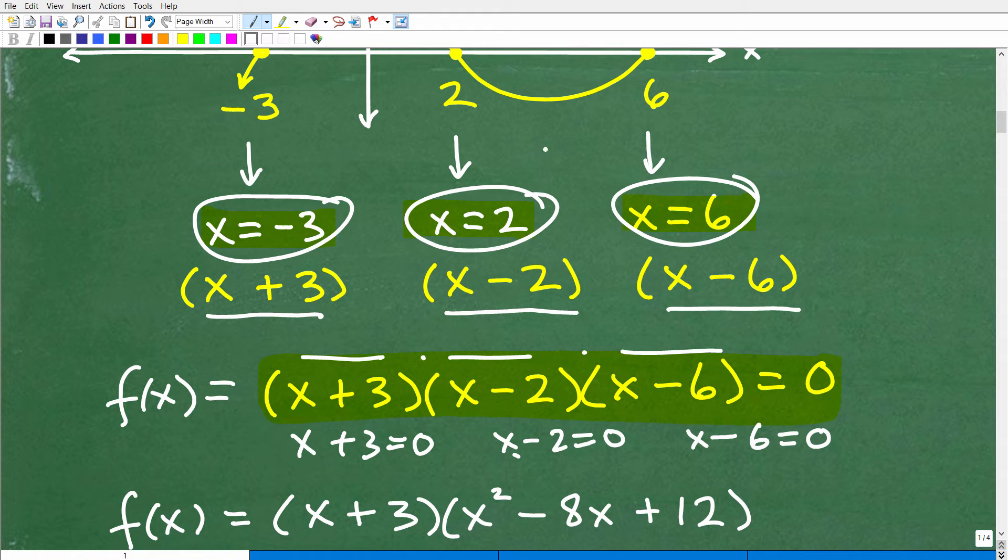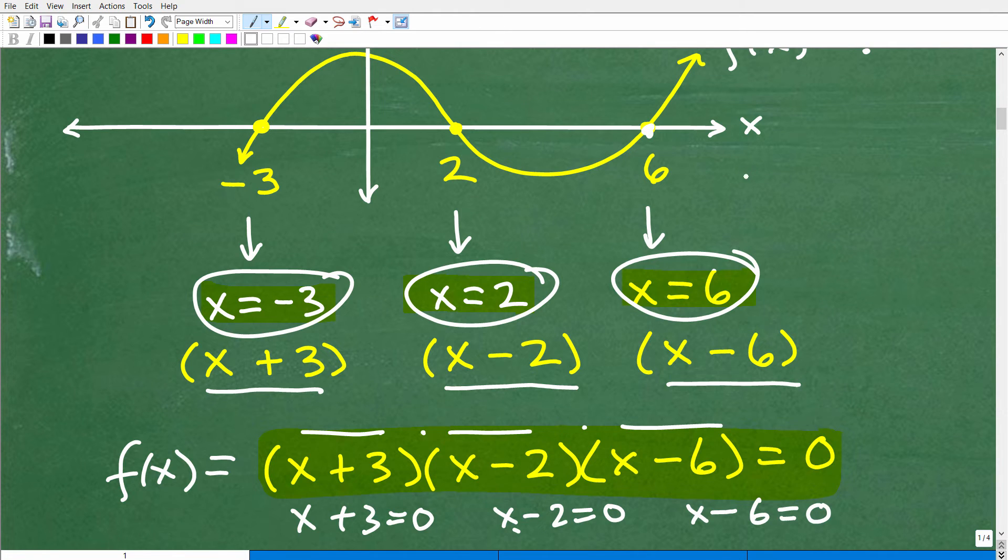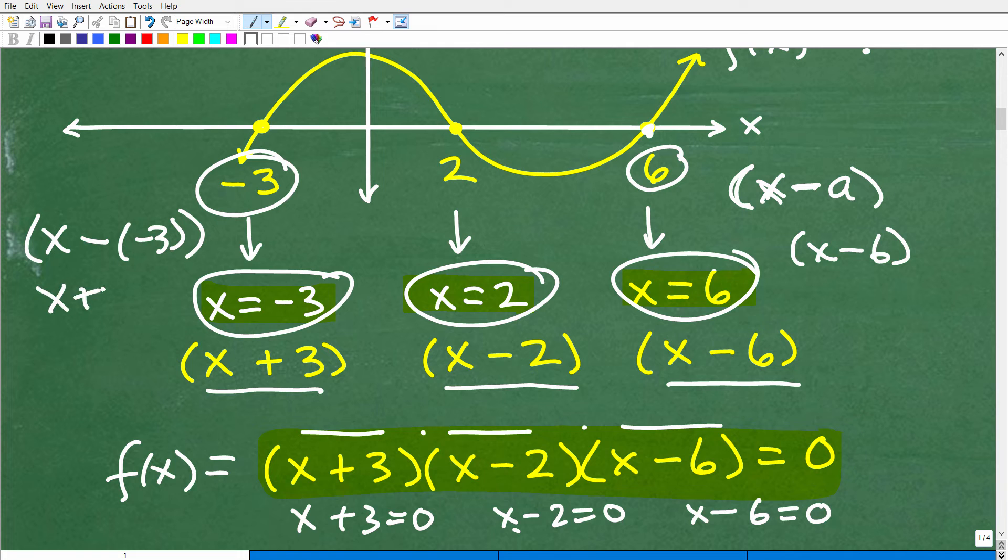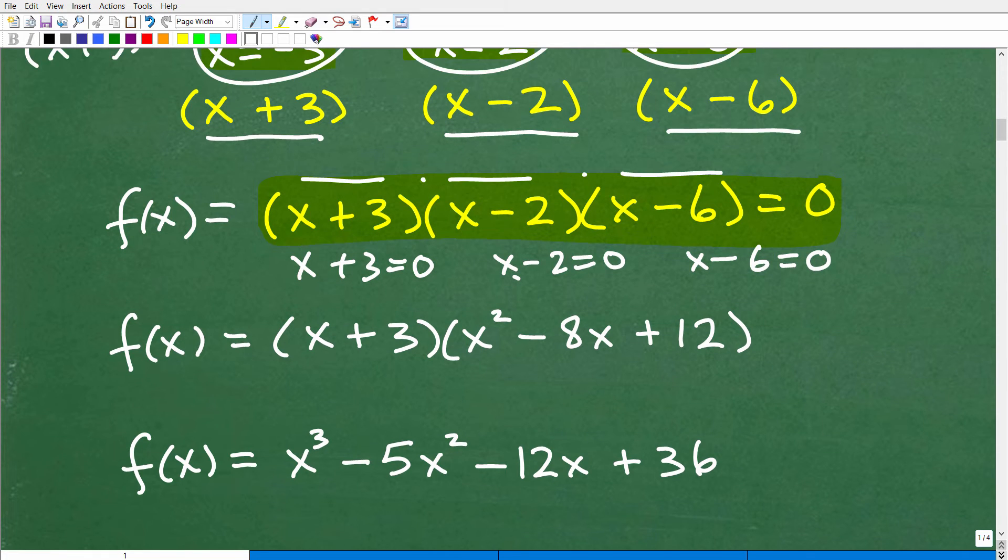Anytime you're writing a linear factor, whatever your x-intercept is, it's going to be x minus a. You write an x minus whatever value that is. If it's 6, it's x minus 6 - that's a linear factor. Here it's negative 3, so it's x minus minus 3, which of course would make that x plus 3. These are our linear factors. This is basically the function. These are our three linear factors. We can create a function and set that equal to f of x.